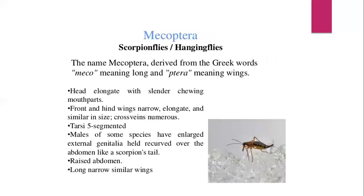Next is Mecoptera. The name Mecoptera is derived from the Greek word 'myco' meaning long and 'tera' meaning wings. Mecoptera is an order of insects belonging to Endopterygota, with about 600 species. These are also known as scorpion flies or hanging flies, because the males have enlarged genitalia which look similar to the stingers of scorpions.